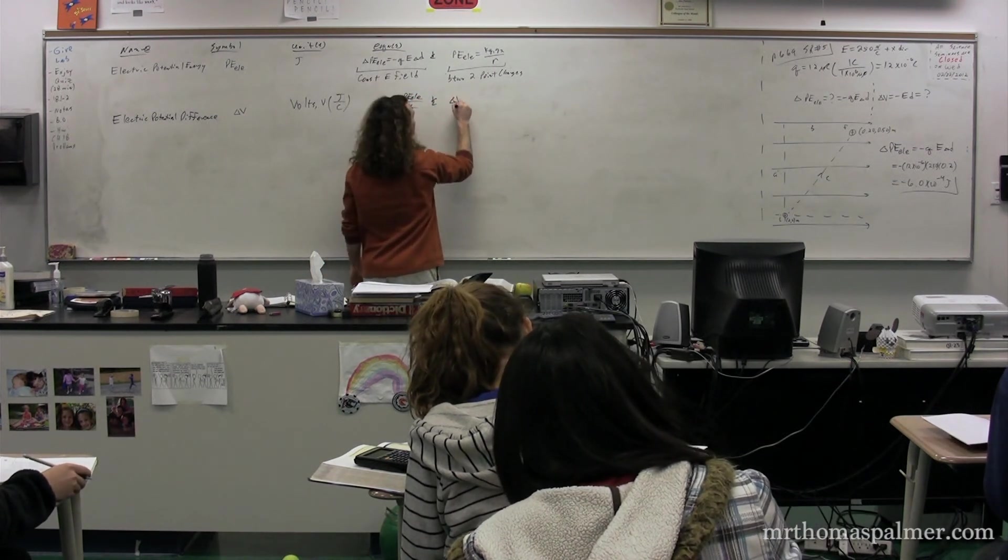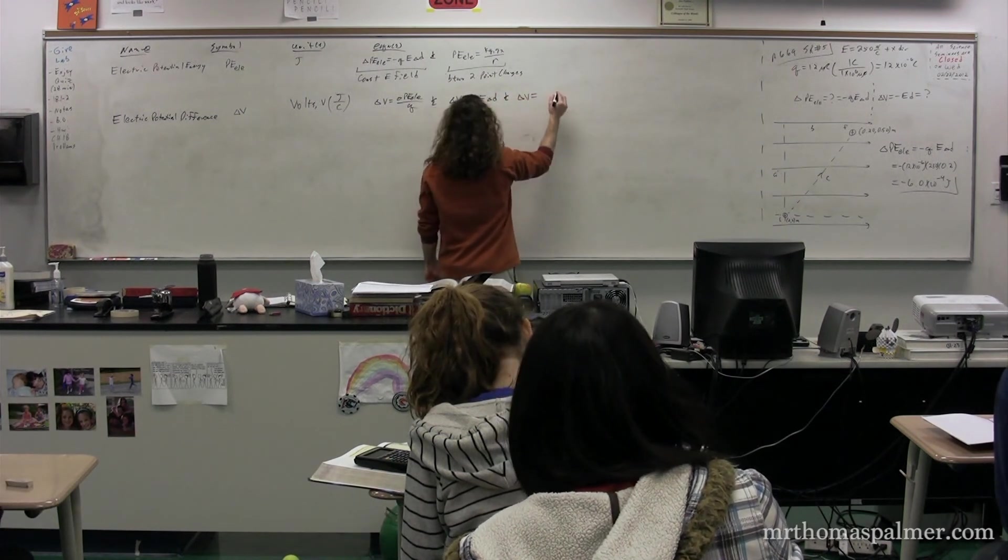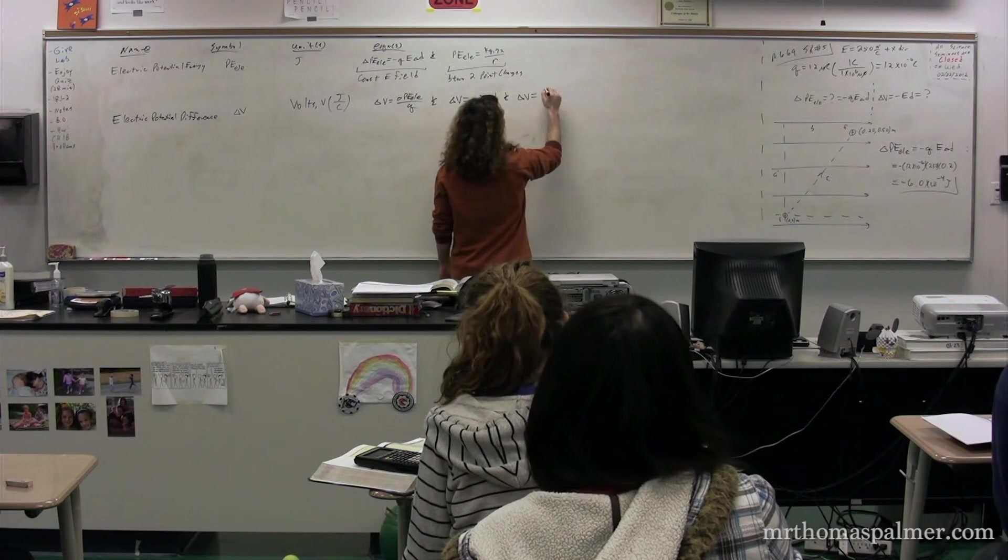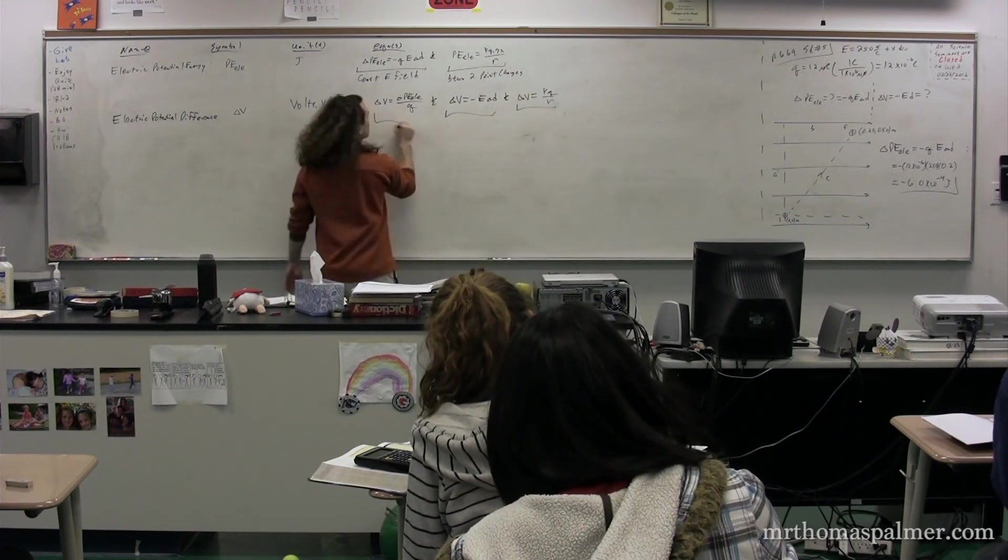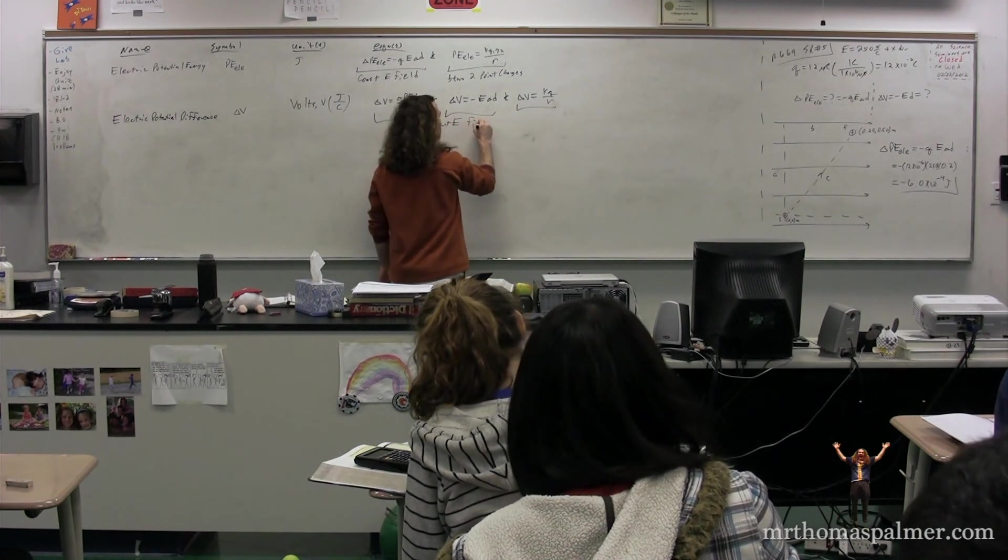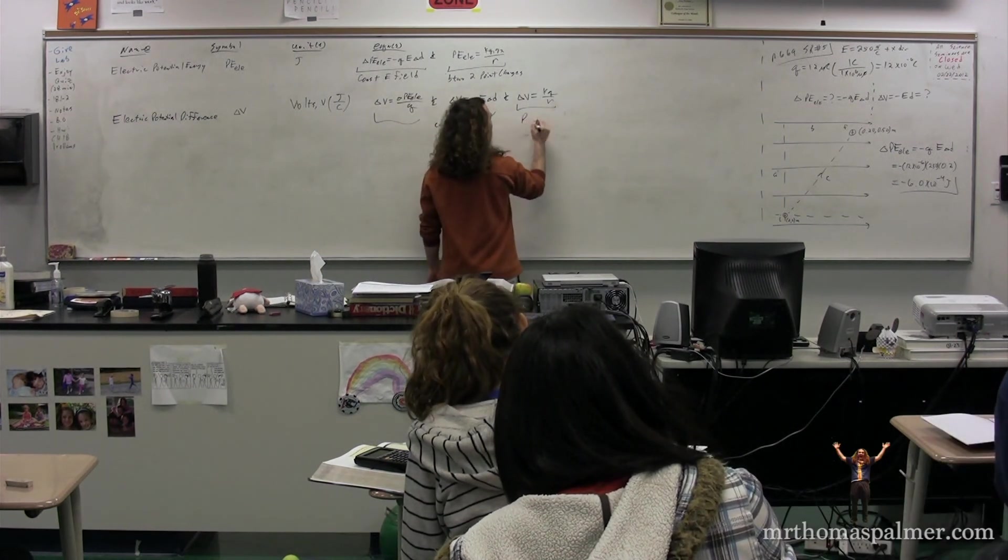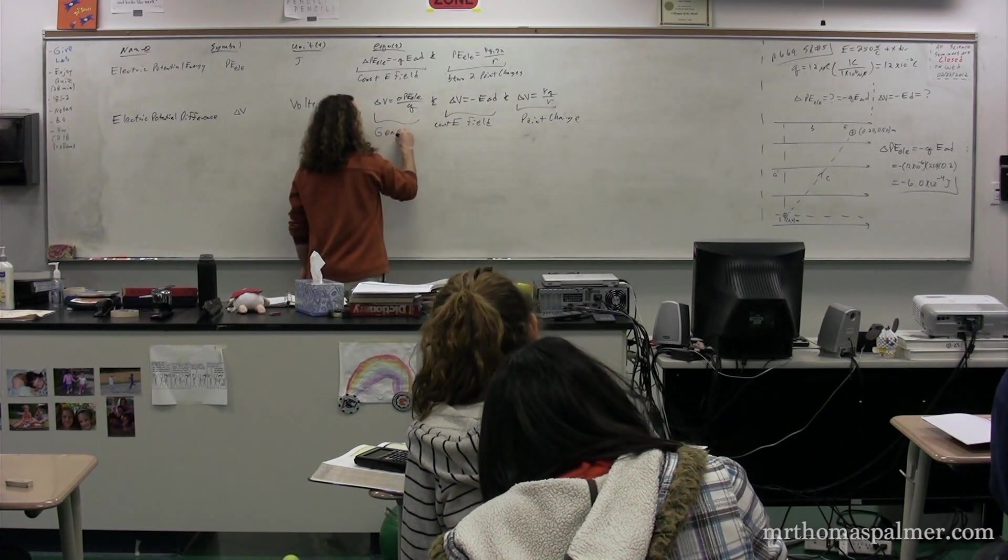So we also have the electric potential difference equals negative E delta D and the electric potential difference equals KQ over R. The differences, of course, are this is for a constant electric field. And this one is for a point charge. And this one is just the general equation.